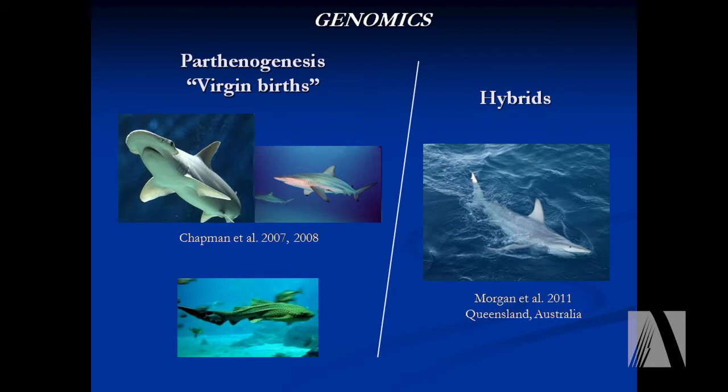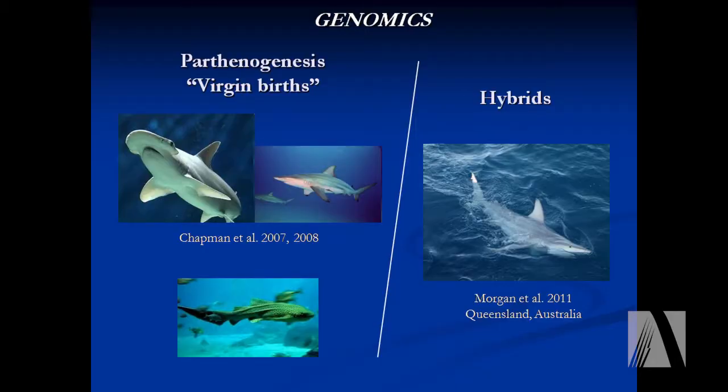First, in genomics, sharks have recently been shown to be capable of parthenogenesis — virgin birth — where females can give birth to viable young without the help of a male. Damian Chapman, now at Stony Brook, documented this first in two aquaria, one in Omaha, Nebraska, and the other in Virginia Beach. There was also a recent report from an aquarium in Dubai. Female sharks in aquaria without the presence of males are capable of this parthenogenesis — now documented across three different families. Before this, all vertebrate classes except sharks and mammals were known to be capable of this.